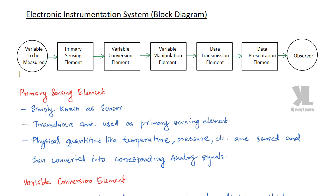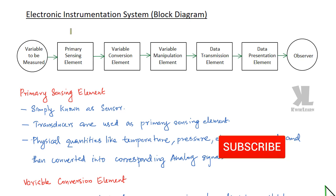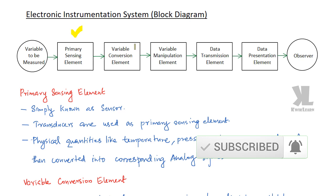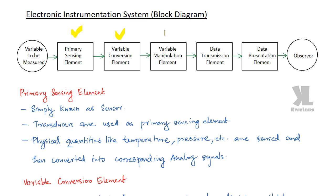First of all, we will be having a variable that is to be measured. The components of the electronic instrumentation system are: first, the primary sensing element; then the variable conversion element; then the variable manipulation element; then the data transmission element; and at last, the data presentation element.